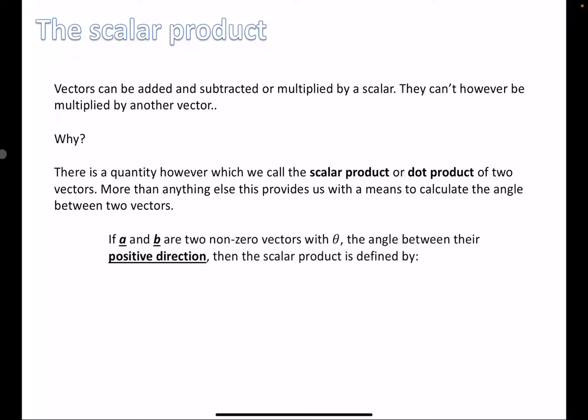If a and b are two non-zero vectors with theta as the angle between their positive directions, then the scalar product is defined by this formula. This formula is given in your formula sheet, so you don't need to memorize it, but you'll use it enough that you do. It's written: a·b = |a| × |b| × cos(θ), where θ is the angle between their positive directions.